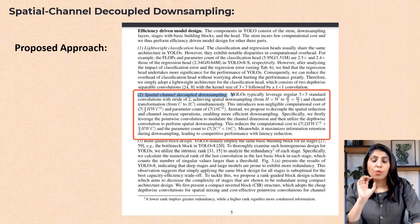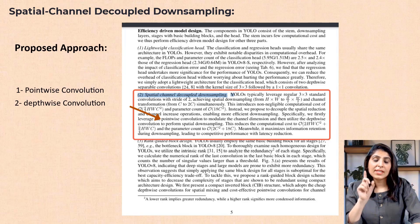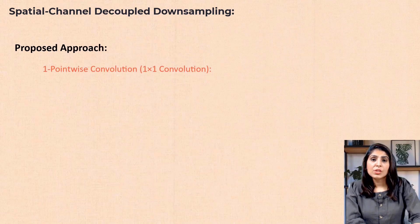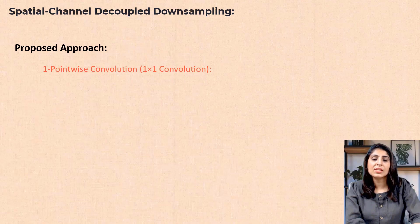For this, two concepts are introduced: pointwise convolution and depthwise convolution. The purpose of pointwise convolution is to adjust the channel dimension without affecting the spatial dimension. For this task, a 1x1 convolution is used to process each pixel separately.